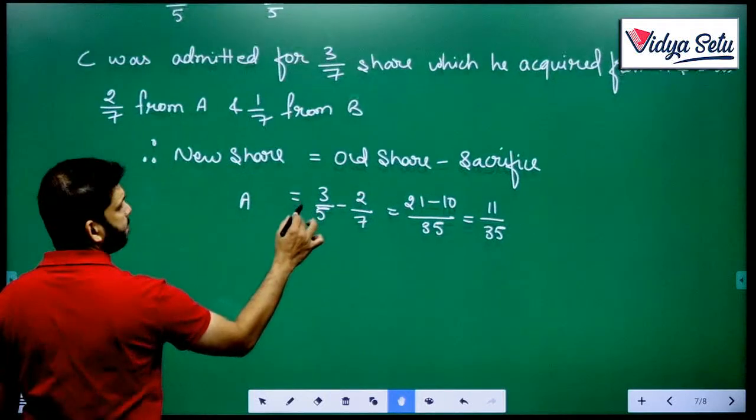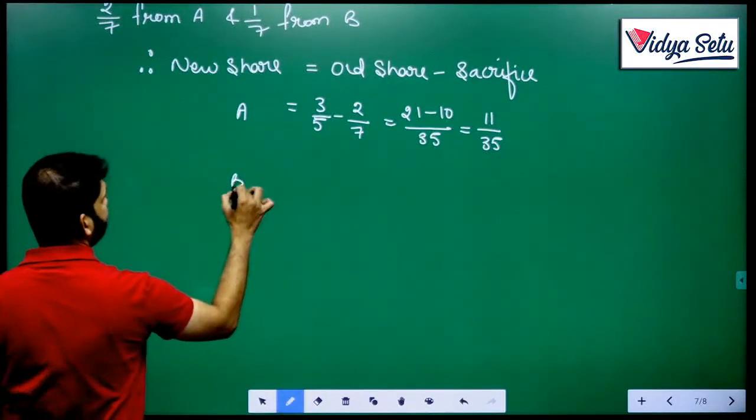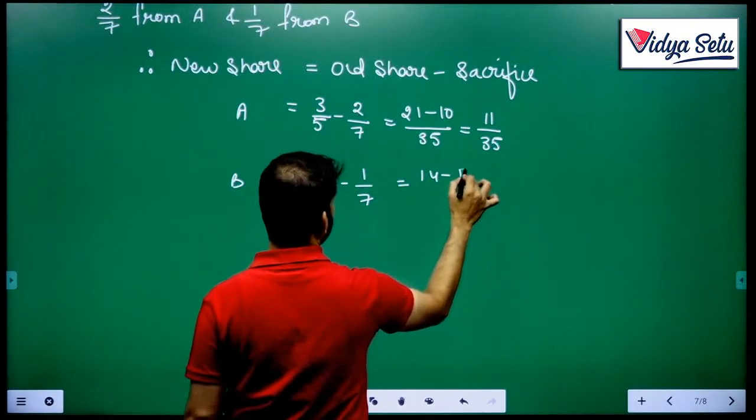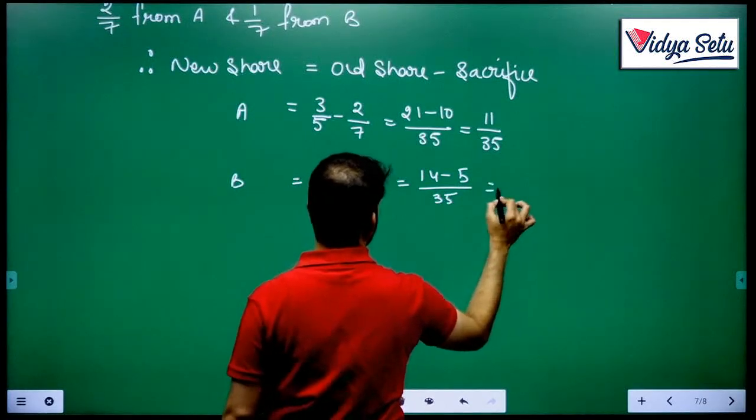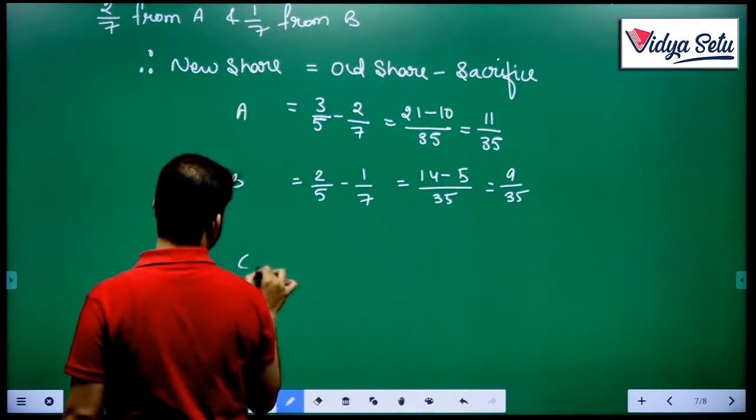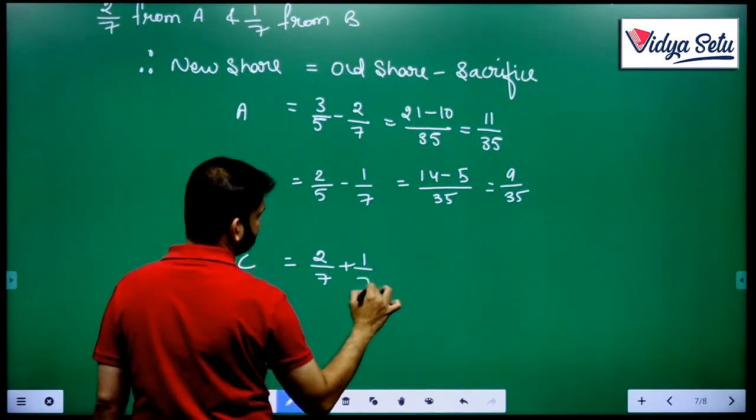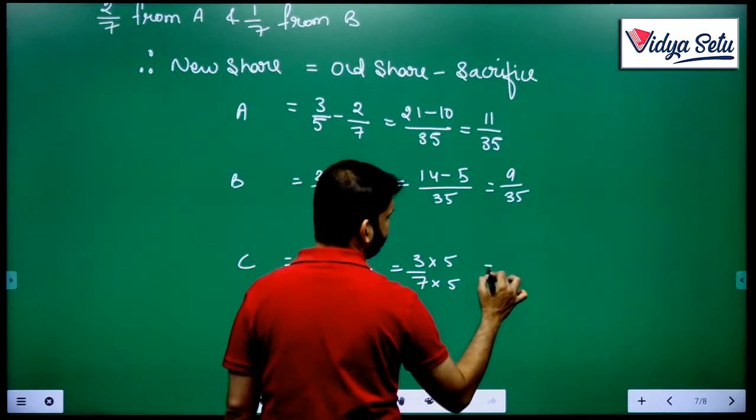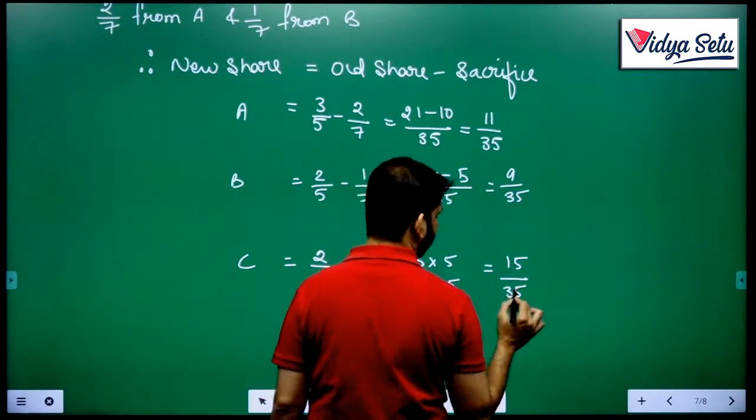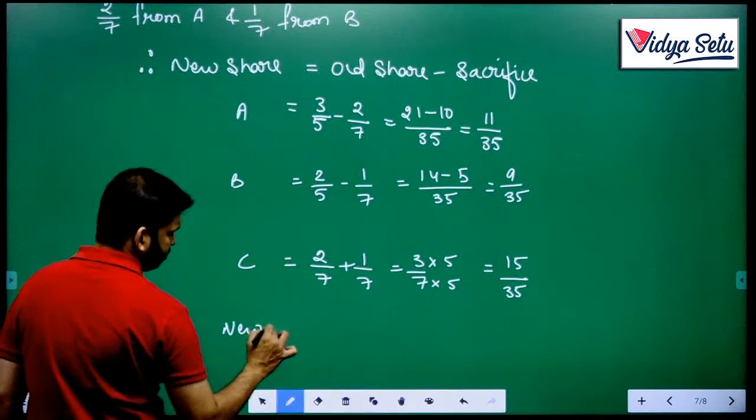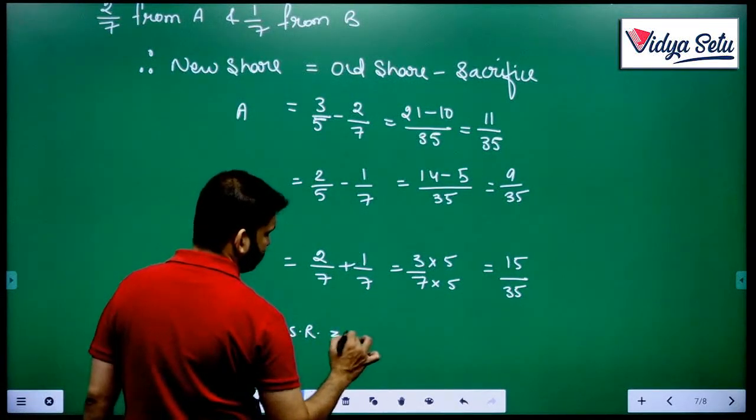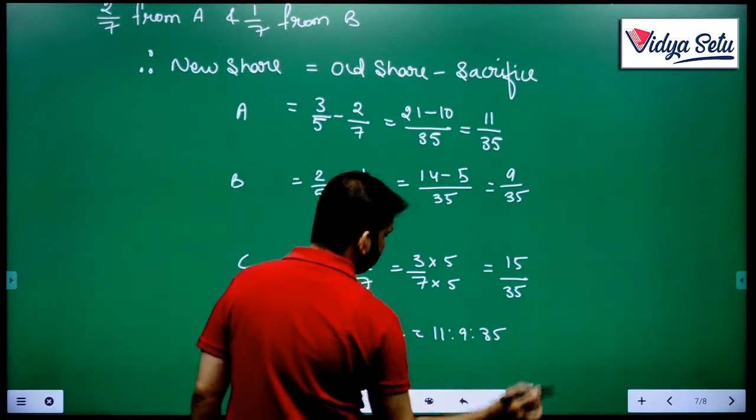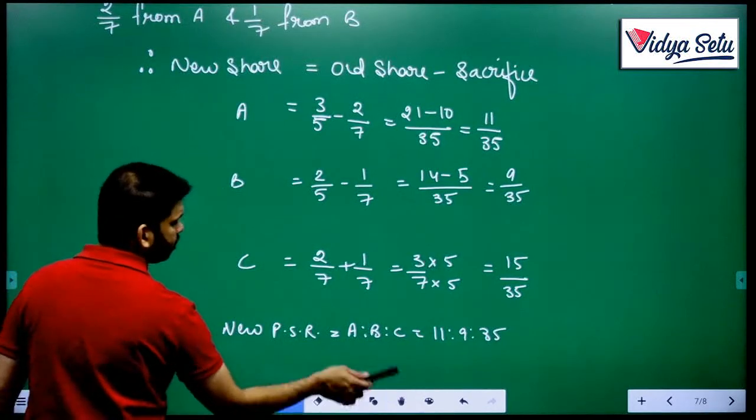B was 2/5 minus 1/7 equals to 14 minus 5 by 35 equals to 9/35, and C we know is 2/7 plus 1/7 equals to 3/7. Let us make the denominator equal by multiplying with 5, so we get 15/35. So new profit sharing ratio of A to B to C equals to 11 is to 9 is to 15. So this is how we solved our question, just have a look.